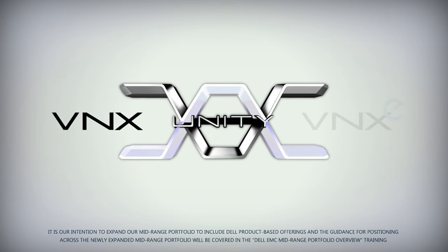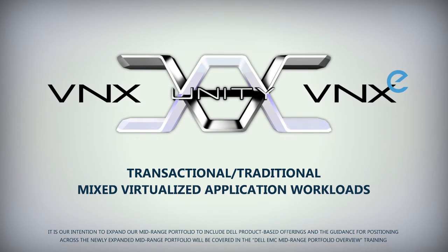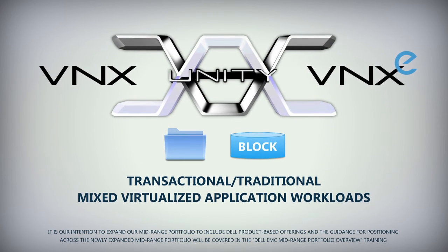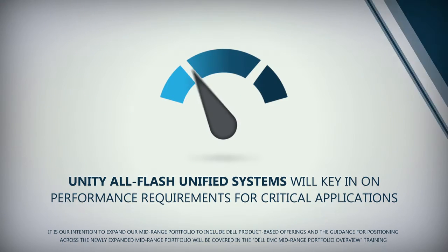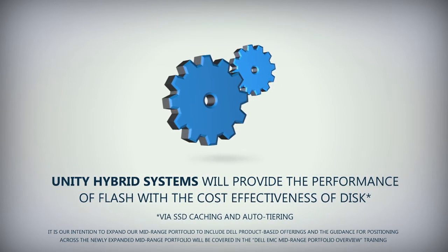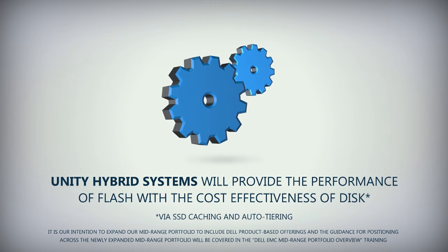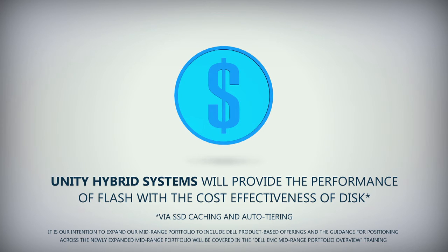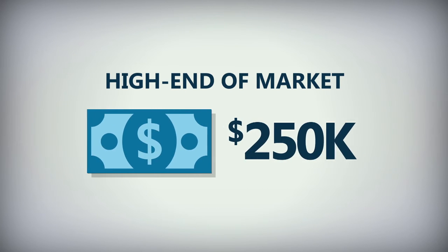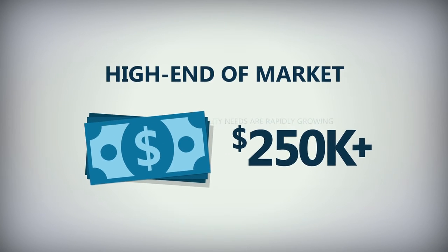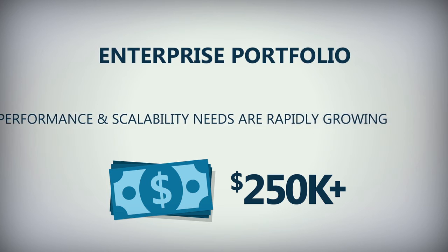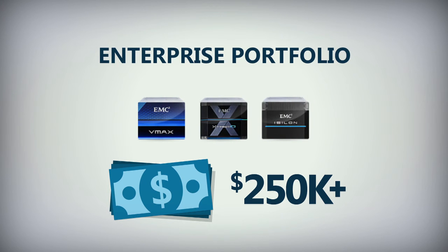As with the VNX/VNXe family, Unity will still focus on targeting transactional and traditional mixed virtualization application workloads, for both file and block, within the mid-range segment. Unity All-Flash Unified Systems will key in on performance requirements for critical applications, while Unity Hybrid Systems will align with providing the performance of flash with the cost-effectiveness of disk. At the high end of the market, inclusive of customer spend of $250,000 plus, continue to position the enterprise portfolio, inclusive of VMAX3, XtremIO, and Isilon solutions.